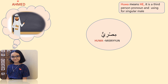For example, my sir is in the picture but he is not present here — he is in Egypt. I will tell you his name is Ahmed, then use a third person pronoun. He is 'Hua' in Arabic. 'Hua Misriyyun' — he is Egyptian. Hua is the third person detached pronoun meaning he, used for singular male.